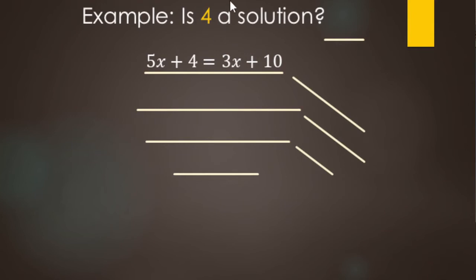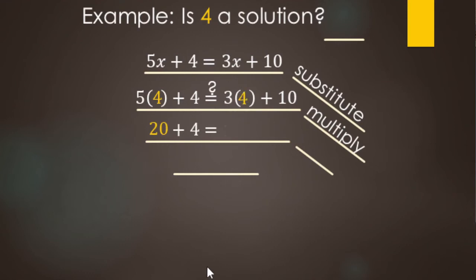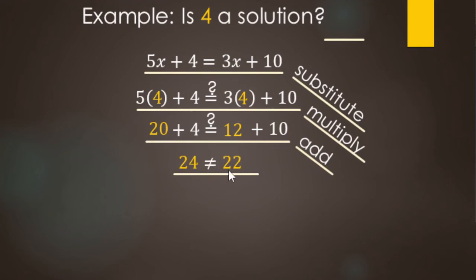In this example, we're checking to see if four is a solution. We start by replacing the X's with four — there's more than one X, so four goes in for each one. We're checking if it makes a true statement. Order of operations: five times four makes 20, plus four; and three times four makes 12, plus 10. Then addition: 20 plus four makes 24, and 12 plus 10 makes 22. These are not equal — 24 does not equal 22 — so four is not a solution.